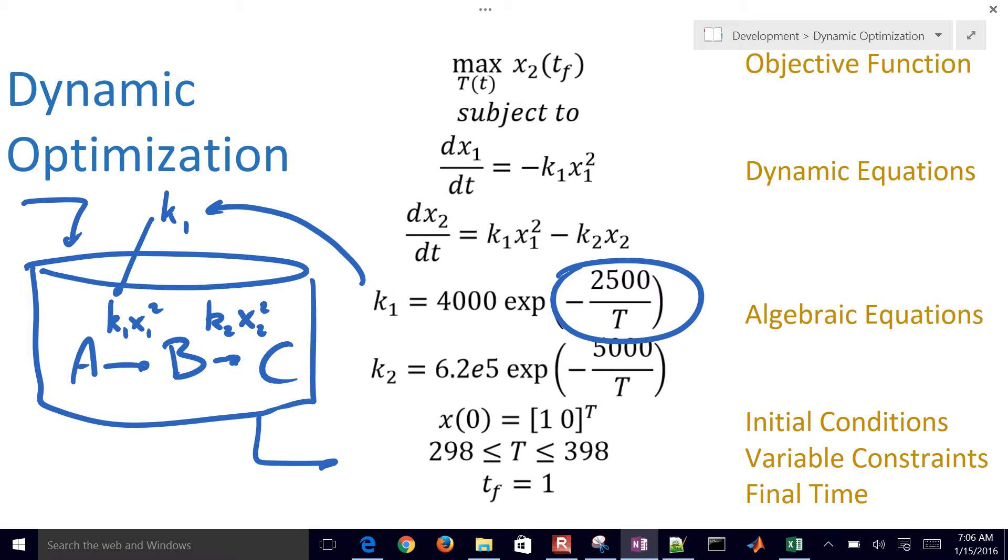So we have this dynamic system. And first of all, we want to just derive some dynamic equations. This is just a species balance for A.